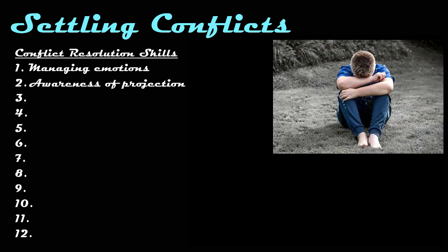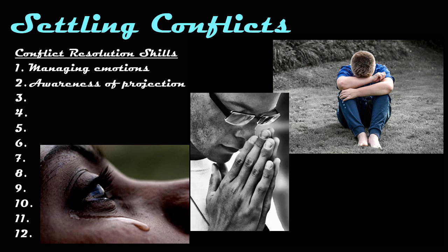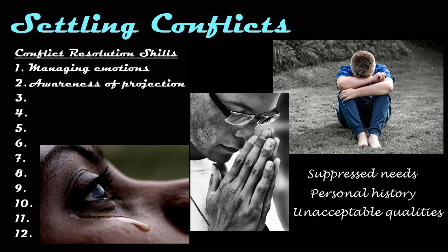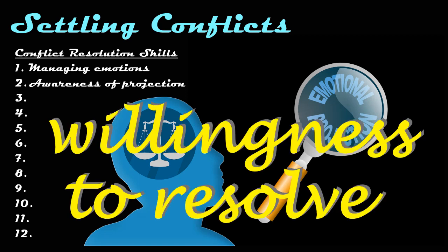For example, if you were seriously let down as a child, you may find that you overreact when people don't do what they promised. When you find yourself becoming emotional over an event or a person's actions, it is important to look inward to see what you can learn about yourself and the reason why you find that person or event so triggering. It may be due to suppressed needs, unresolved aspects of your personal history, or qualities you find to be unacceptable. Viewing a situation objectively rather than through the lens of emotional projection will enable you to find a willingness to resolve conflict.